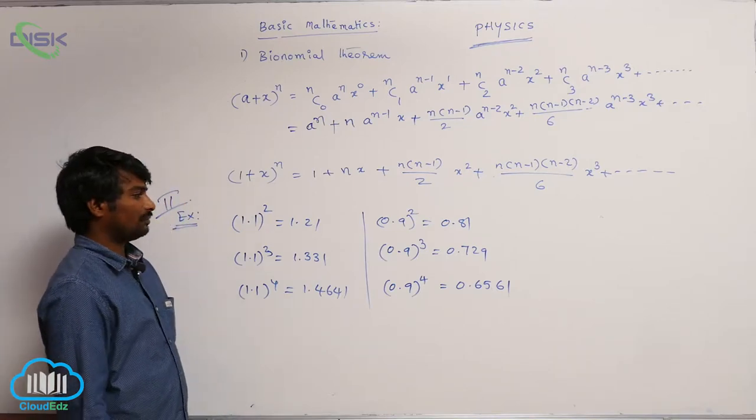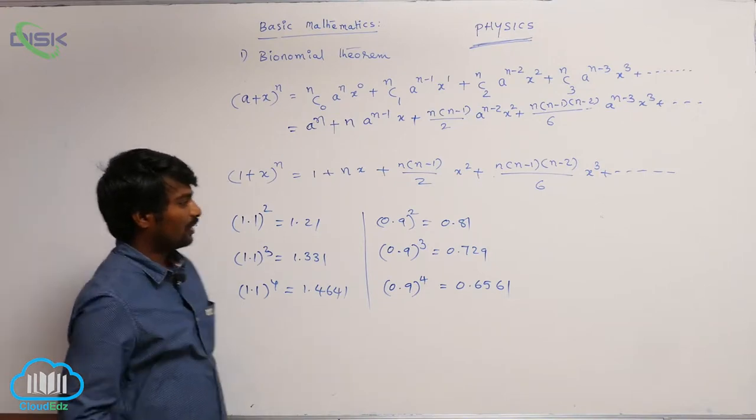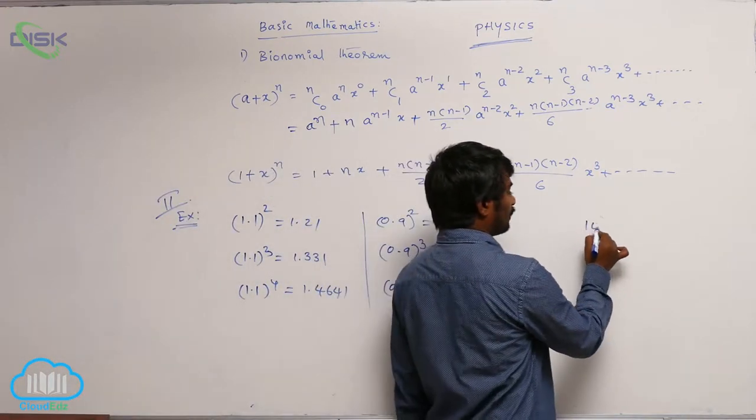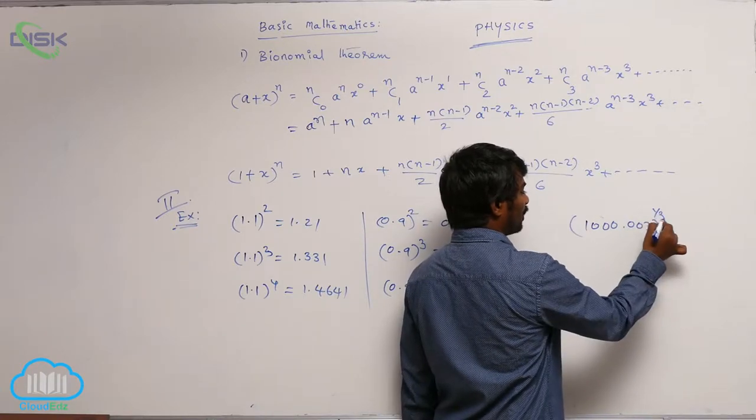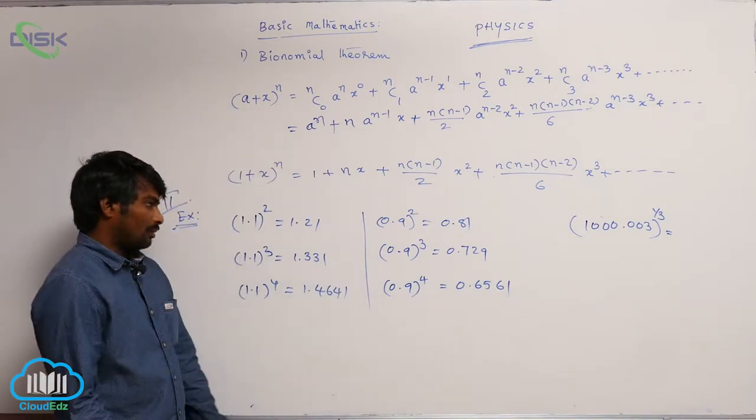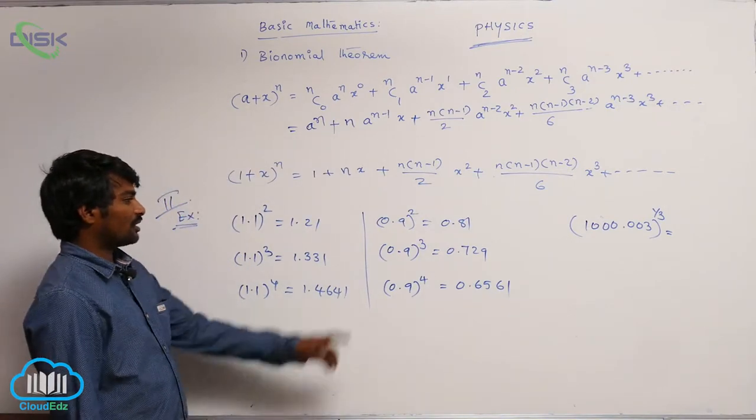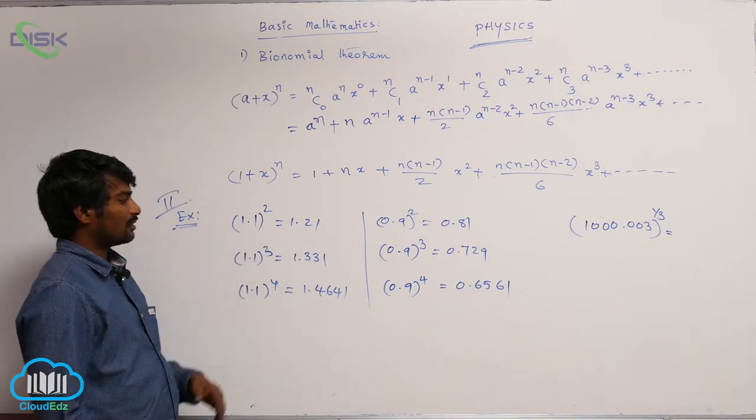Let me answer my second question that I have raised: how to calculate 1000.003 whole power 1 by 3, how to solve such type of problems. Before going to solve that problem, let us understand these examples.